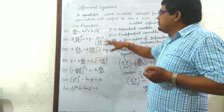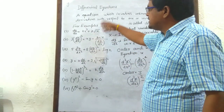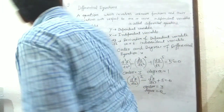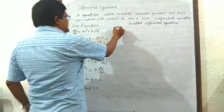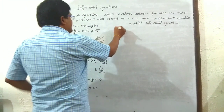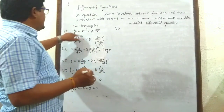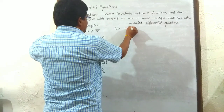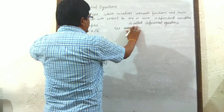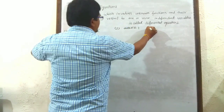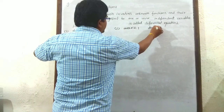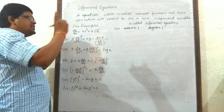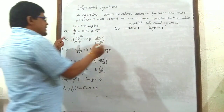Now we will write the order and degree of the original examples. First example: the highest order derivative is dy/dx, so order equals 1 and degree equals 1, since the highest exponent on it is 1.